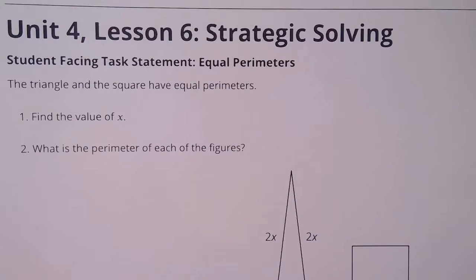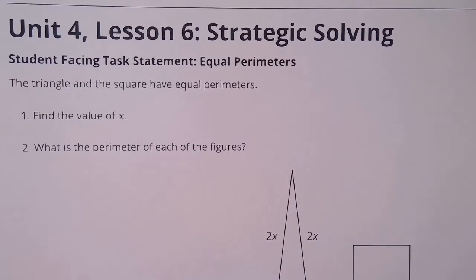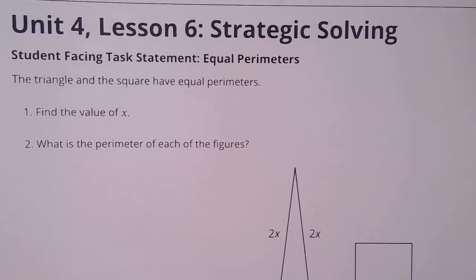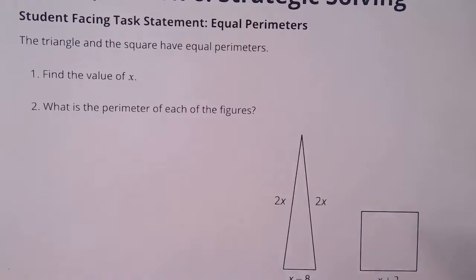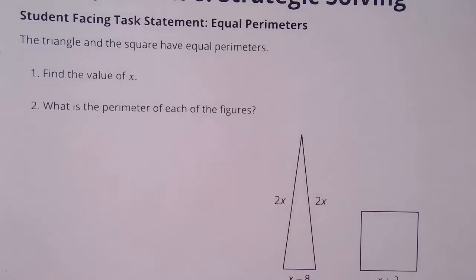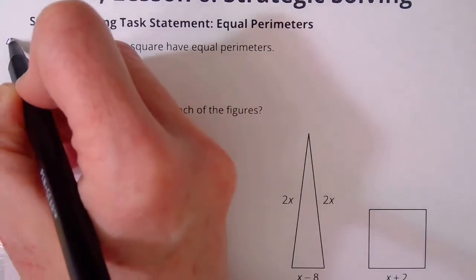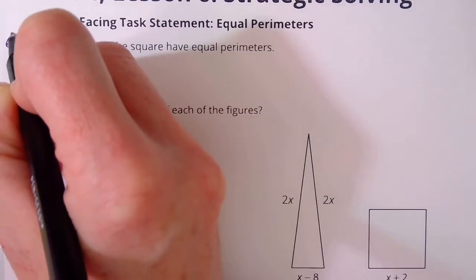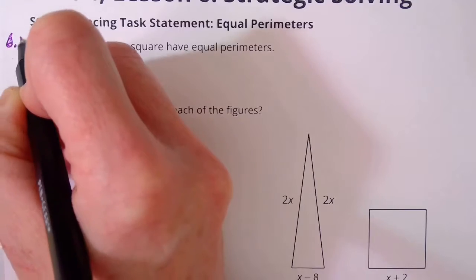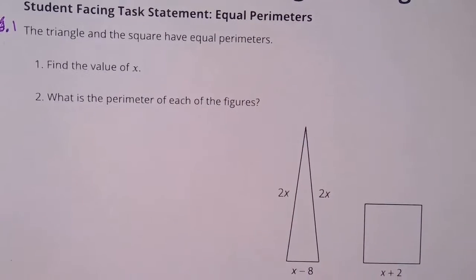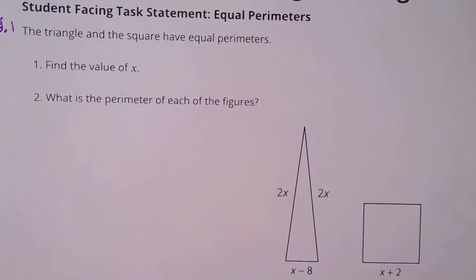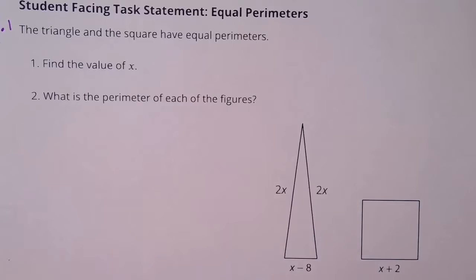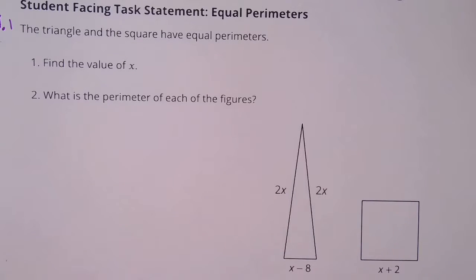Lesson six, strategic solving. This is problem 6.1. The triangle and the square have equal perimeters. Find the value of x. What is the perimeter of each figure?